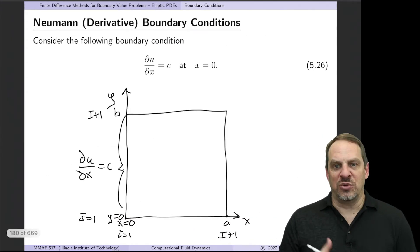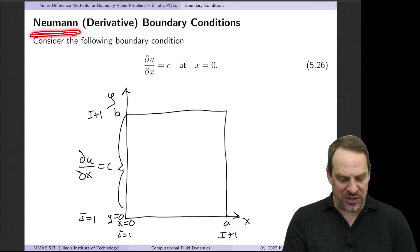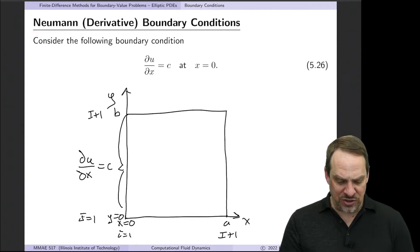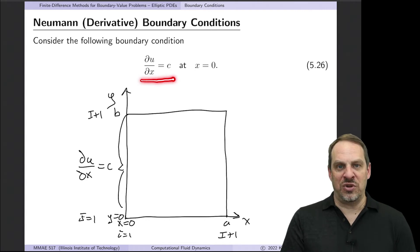Where things get a little more difficult is if you have a Neumann or a Robin boundary condition. So let's look at the Neumann case. We have a derivative boundary condition, say partial U partial X is equal to some known value C at X is equal to zero.